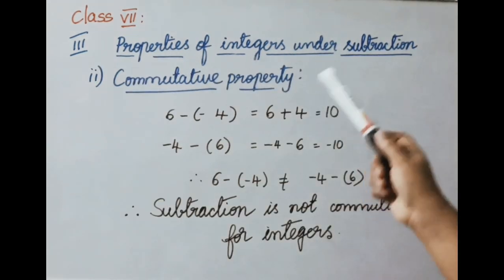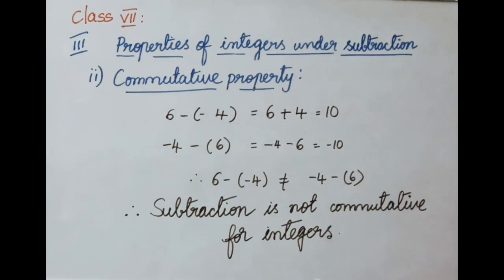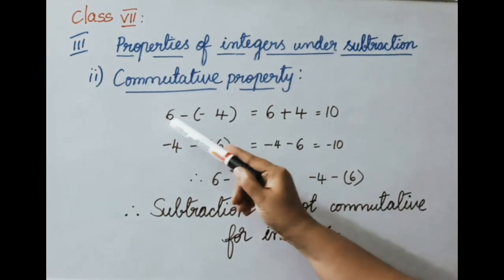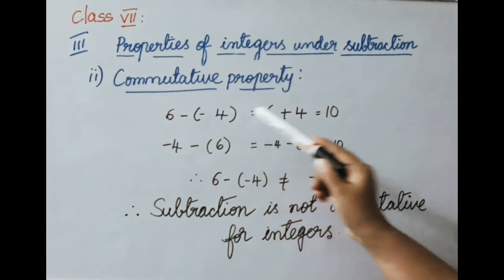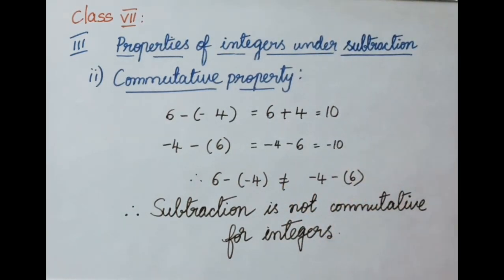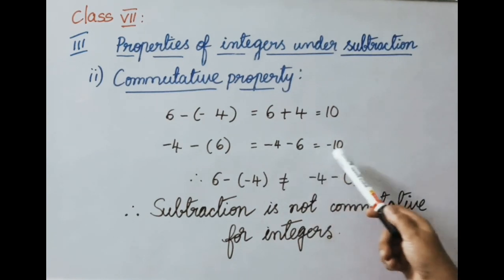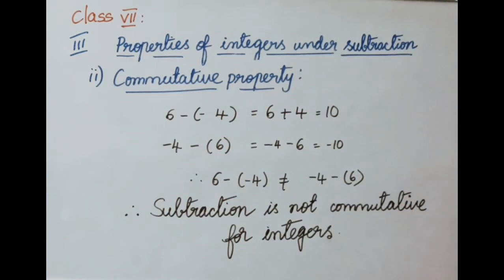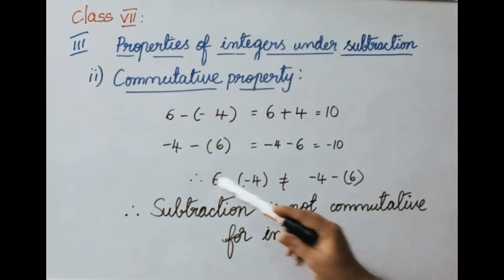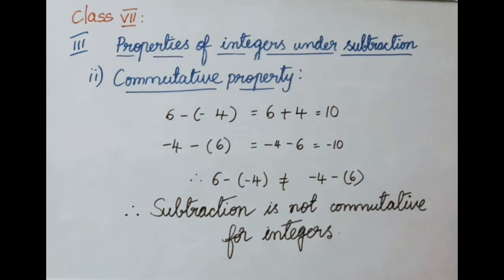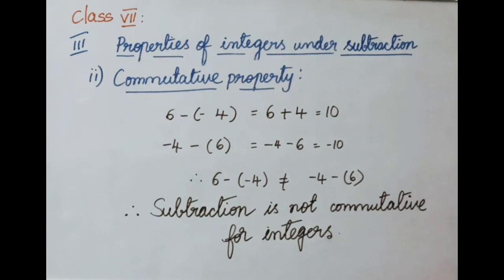Commutative property under subtraction: example — A minus B is 6 minus (minus 4). Minus of minus is plus, so 6 plus 4 equals 10. Now B minus A is minus 4 minus 6 equals minus 10. Both answers are not equal, so A minus B is not equal to B minus A. Therefore subtraction is not commutative for integers.